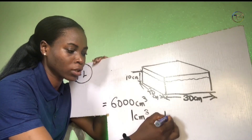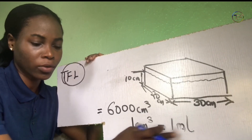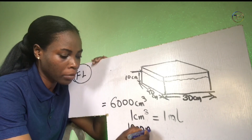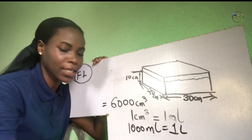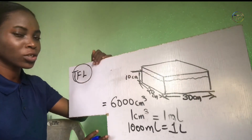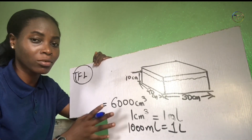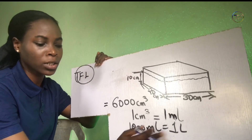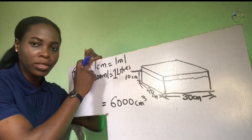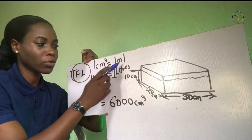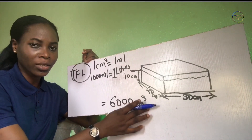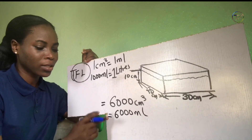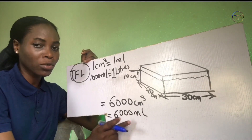One centimeter cubed is equal to one milliliter — you can check this on any conversion table or on Google. One centimeter cubed equals one milliliter, and one thousand milliliters gives you one liter. So if one centimeter cubed equals one milliliter, therefore 6,000 centimeters cubed is going to equal 6,000 milliliters.